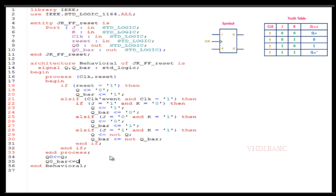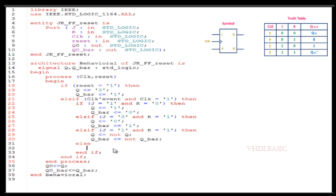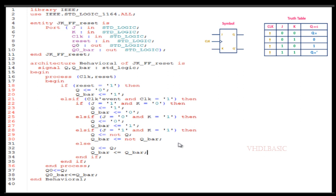In the if statement starting at line 22, if J equals 1 and K equals 0, Q will be assigned 1. Then in the else-if starting at line 25, we check if J equals 0 and K equals 1 — if true, we assign 0 to Q and 1 to Q-bar. Then we check if J equals 1 and K equals 1 — if true, we toggle the previous Q value and also toggle Q-bar, assigning the toggled value to Q-bar.